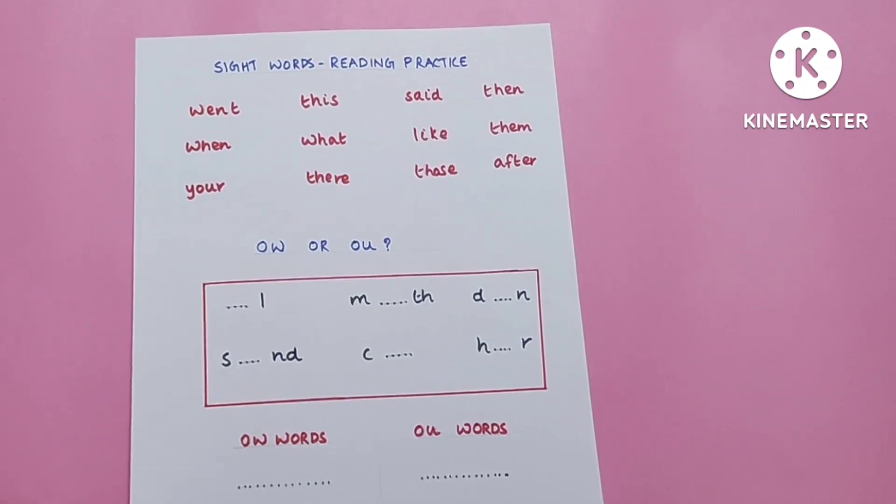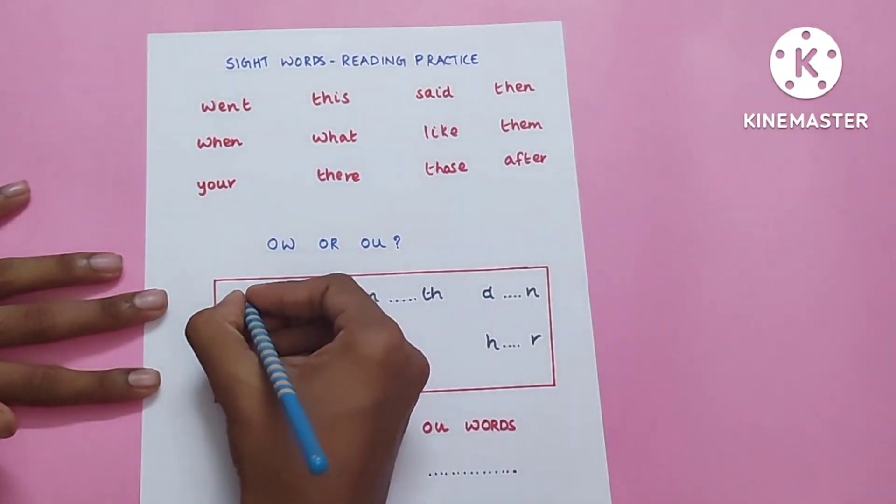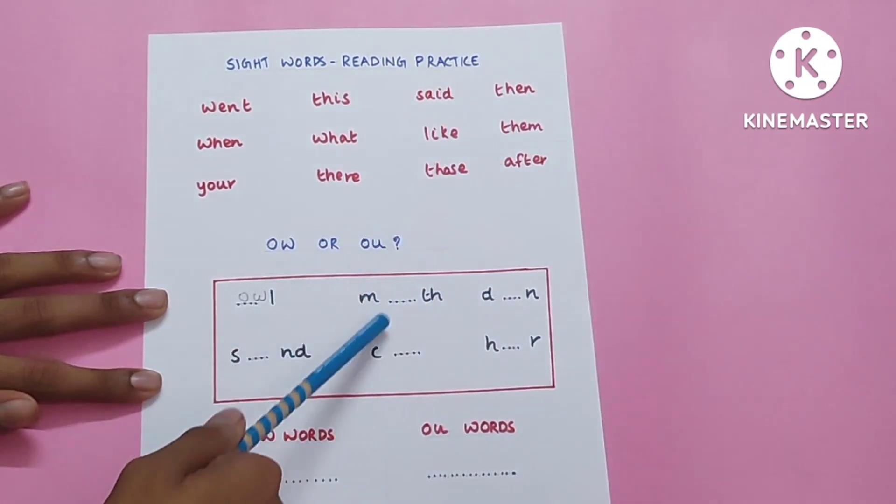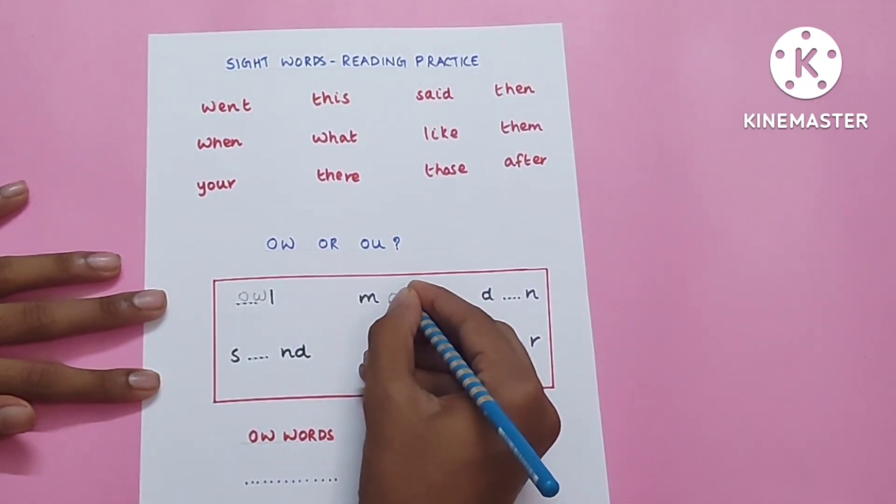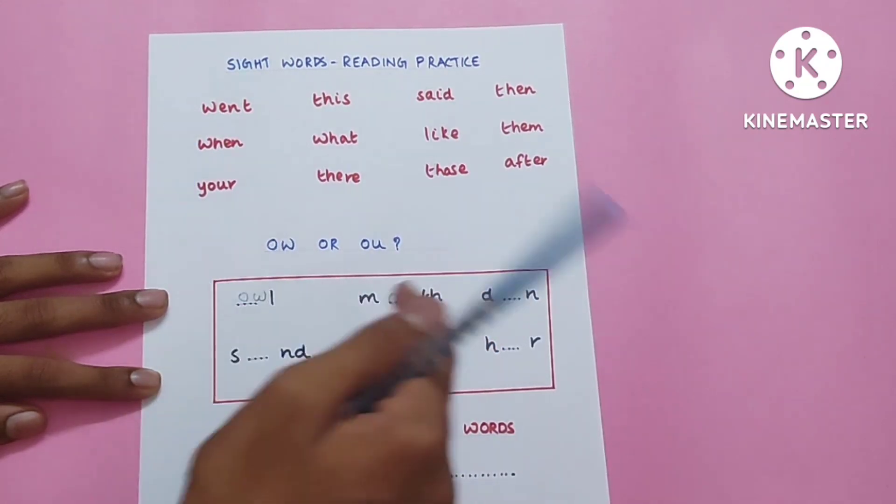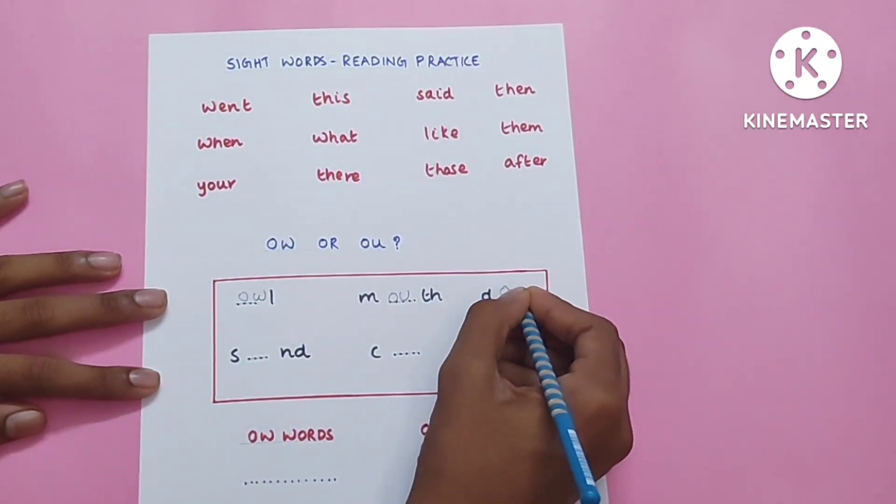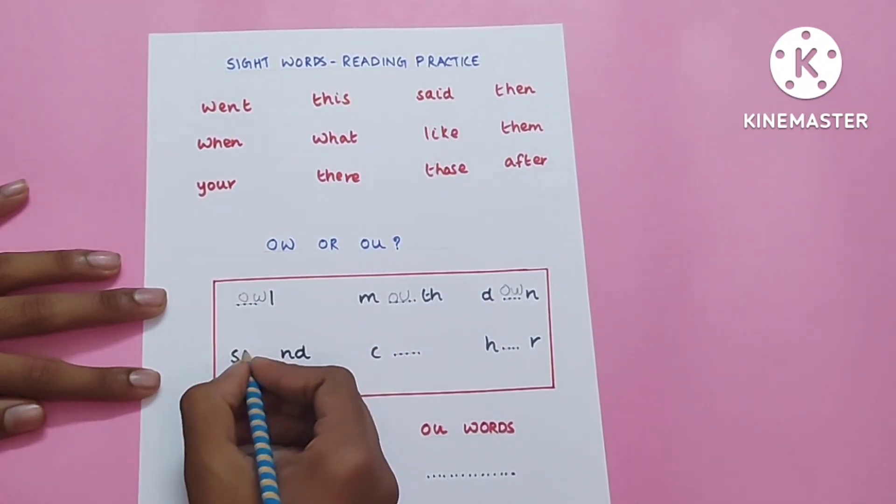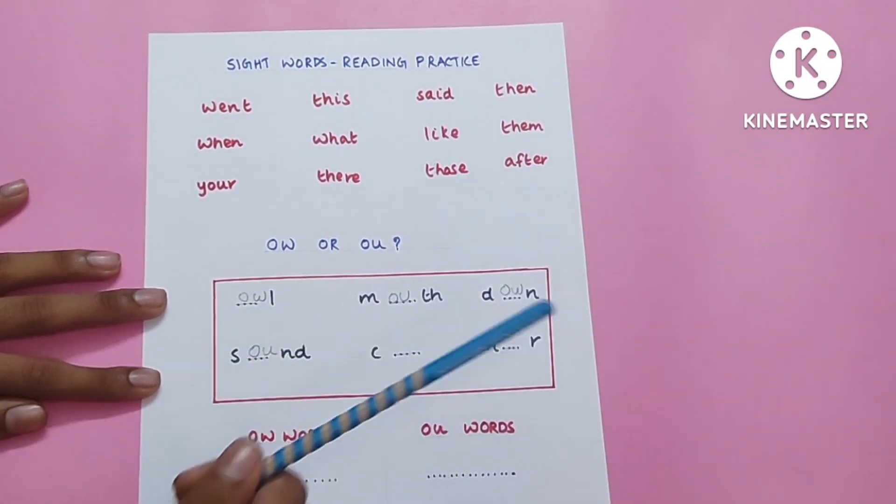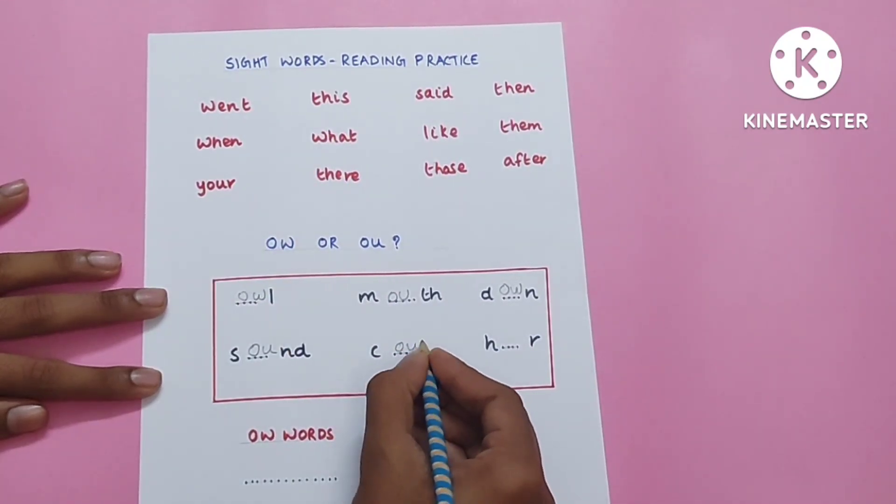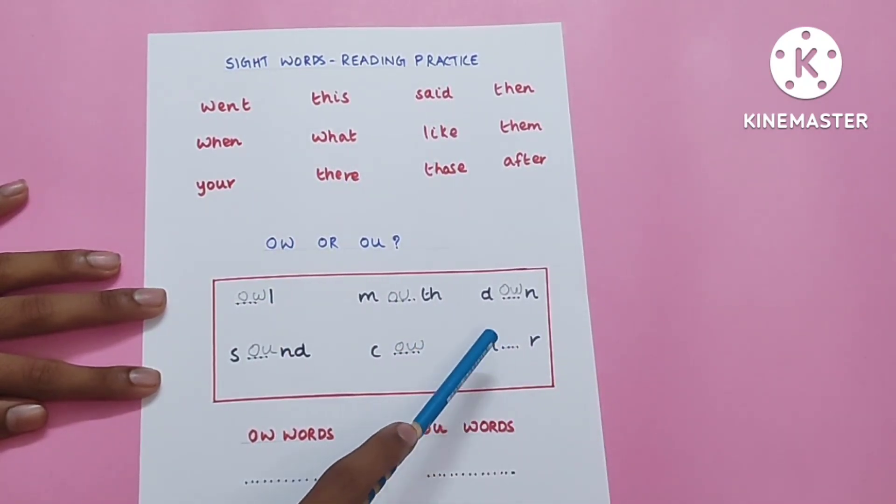OW or OU? OW. Mouth, down, the OW sound, OU. Cow, OW. Our, OU.